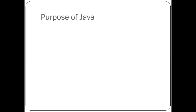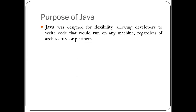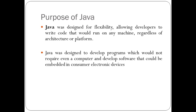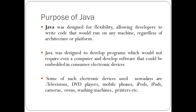When there were already languages like C and C++, what was the need for a new language? Java was designed for flexibility, allowing developers to write code that would run on any machine regardless of the architecture or platform. Java was designed to develop programs that would not require even a computer, and to develop software that could be embedded in consumer electronic devices such as televisions, DVD players, mobile phones, iPods, iPads, cameras, ovens, washing machines, and printers.